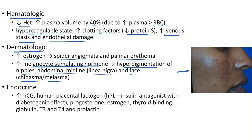Endocrine changes include increase in human chorionic gonadotropin, human placental lactogen (HPL) — which is an insulin antagonist with diabetogenic effect — and also increases in progesterone, estrogen, thyroid-binding globulin, T3, T4, and prolactin. The patient will still be in a euthyroid state.